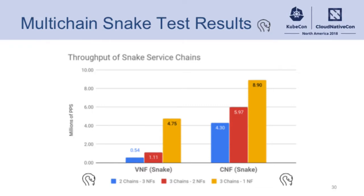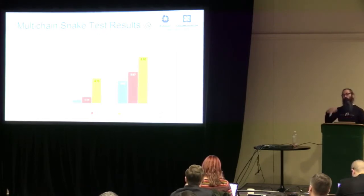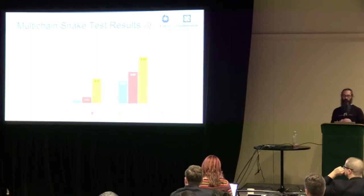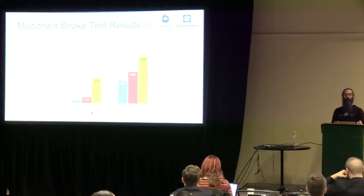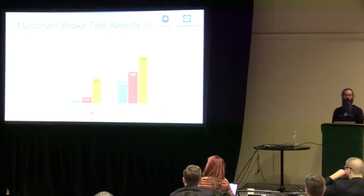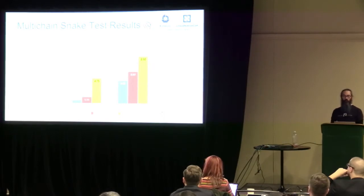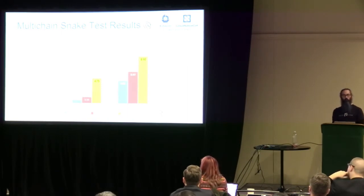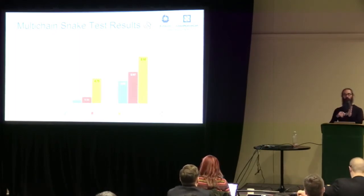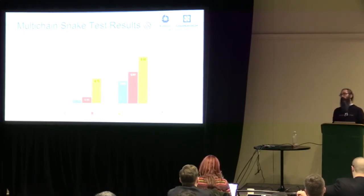Here's a side-by-side comparison — KVM running the VNFs and Kubernetes running the CNFs. We're showing throughput in millions of packets per second. For two chains with three network functions each on VNFs, we had about half a million packets per second. The same test on Kubernetes with CNFs had nearly eight times performance improvement with 4.3 million packets per second — all looping through the V-switch on both. The best case for the VNFs was around 4.75 million packets per second with three chains and one network function, and we still had nearly a 2x increase for the CNFs.